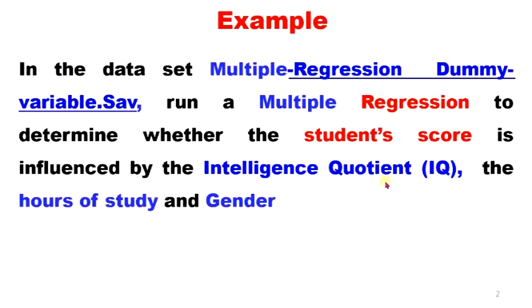In the dataset, multiple regression demivariables.sav, run a multiple regression to determine whether the student score is influenced by intelligence questions, IQ, hours of study, and gender.